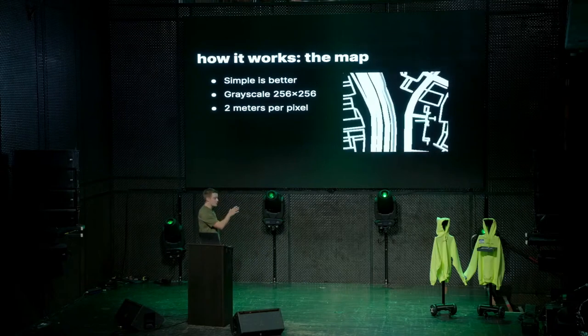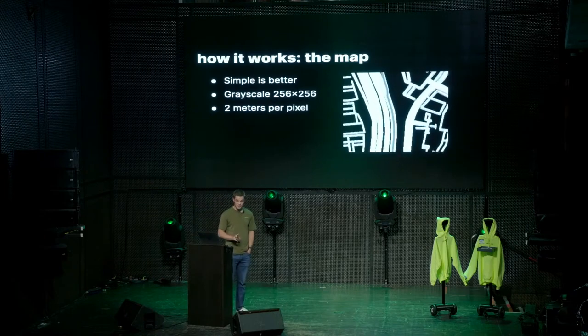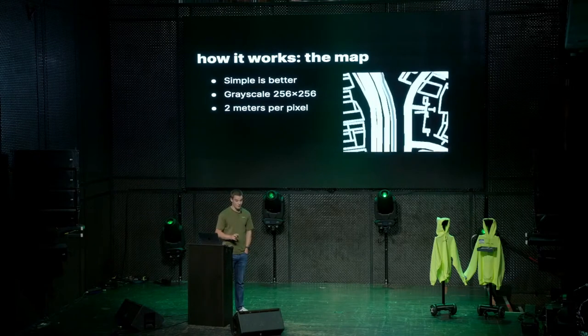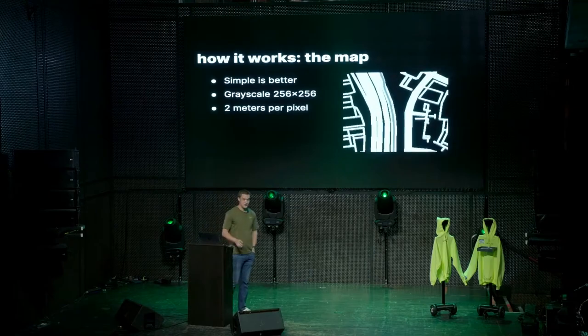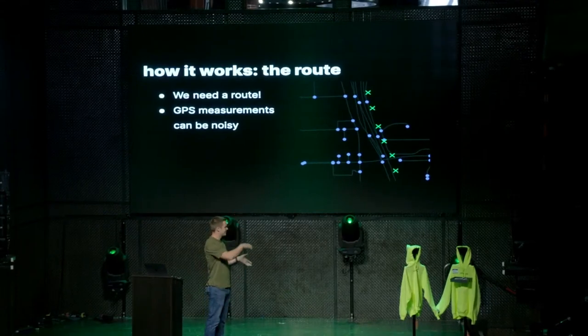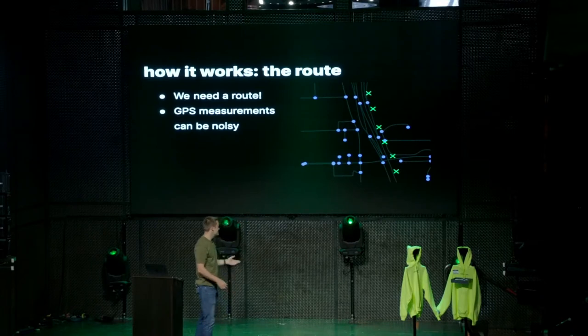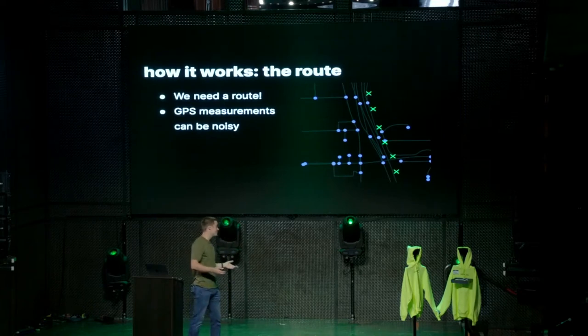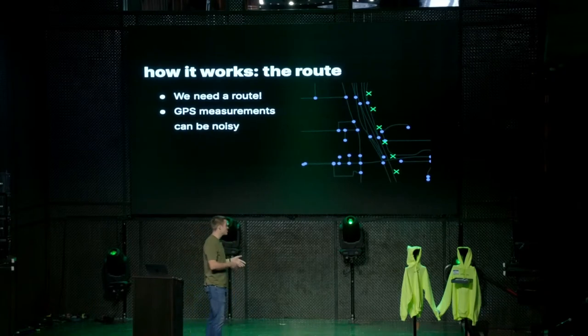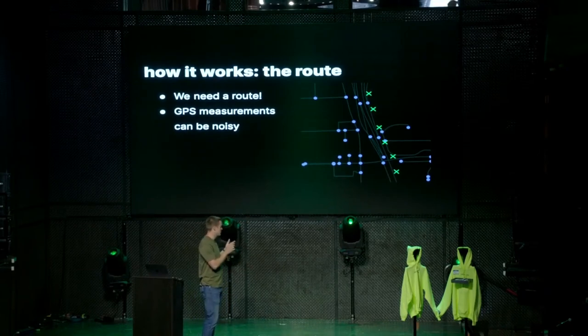We want to render a lot of these maps, and we need two things: the latitude-longitude for each map and a route. The latitude-longitude is easy enough — the Comma 3 has a built-in GPS. The route is a little bit trickier. Here you can see a visualization of a chunk of the OpenStreetMaps graph. The junctions are marked in blue, and we have some GPS measurements from a Comma 3 marked in green with X's. You can see that the GPS measurements don't line up exactly with the road — they can be shifted or noisy. For lots of reasons, the GPS measurements may not line up exactly with the OpenStreetMaps graph.